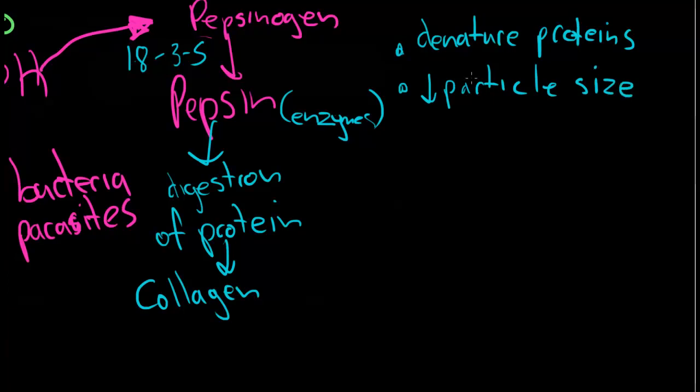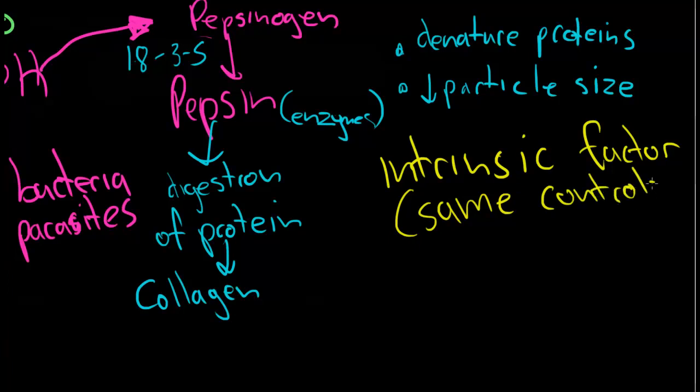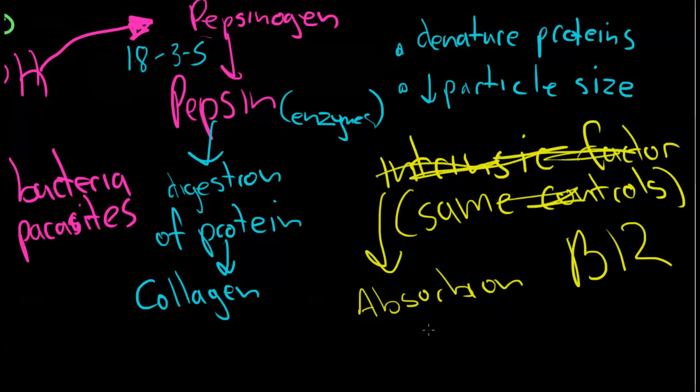Okay, so that's the main things it does that's important for your digestion. There's one other thing that you should always think of when you're thinking about gastric acid, and that's intrinsic factor. Why is this important? It has the same controls as gastric acid, and that's important because intrinsic factor is absolutely crucial in the absorption of B12. So if some reason your controls are messed up for your gastric acid, then you're not going to get your B12 absorbed, and then you're going to get macrocytic anemia because your red blood cells are not going to be able to be made properly. So that's a brief overview.